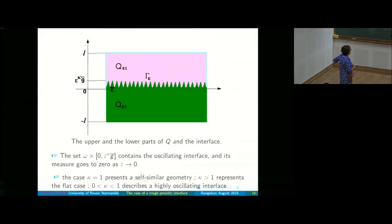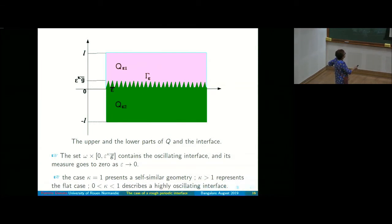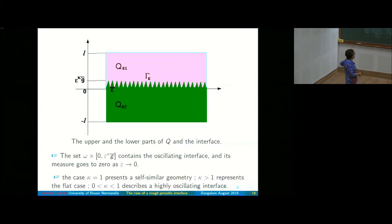The oscillating interface lies in a band of size 1 × ε^k, so the volume of that zone containing the interface goes to zero. If k = 1, we have a self-similar geometry. If k > 1, we have a flat case — it goes quickly to flat. If k is between 0 and 1, we have a highly oscillating interface.